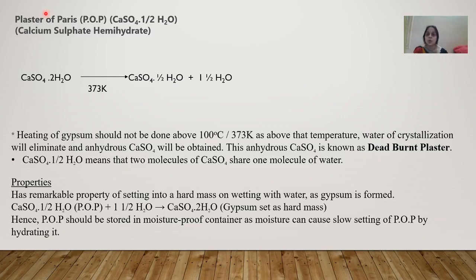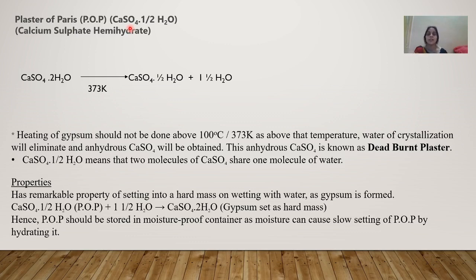Now coming to POP — Plaster of Paris. Its formula is CaSO4·½H2O, calcium sulfate hemihydrate. Two molecules of CaSO4 share one molecule of water, so for one CaSO4 it is half a molecule of water. CaSO4·2H2O is called gypsum.